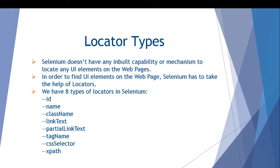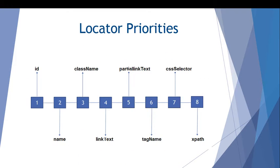Selenium doesn't have any inbuilt capability or mechanism to locate UI elements on web pages, so it has to take the help of locators. We have eight types of locators in Selenium: ID, Name, Class Name, Link Text, Partial Link Text, Tag Name, CSS Selector, and XPath. This is also the priority order of all the locators.